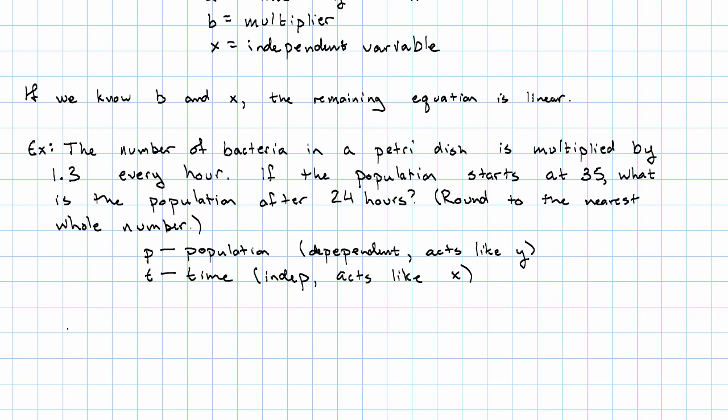What are we told? We're told that the starting population is 35, the multiplier is 1.3, and we're asked to find what is the population after 24 hours.